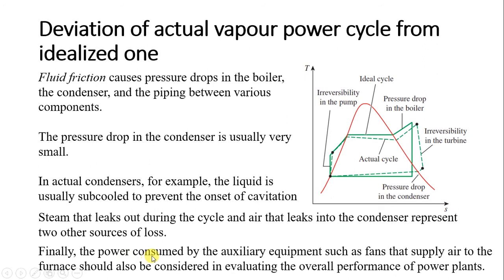Another loss is the power consumed by auxiliary equipment such as fans that supply air to the furnace. In a boiler, water is heated and converted to steam using fossil fuel combustion in a furnace, and fans are used to supply air to the furnace. The power consumed by fans and other auxiliary equipment must also be considered when calculating the overall performance of the power plant.